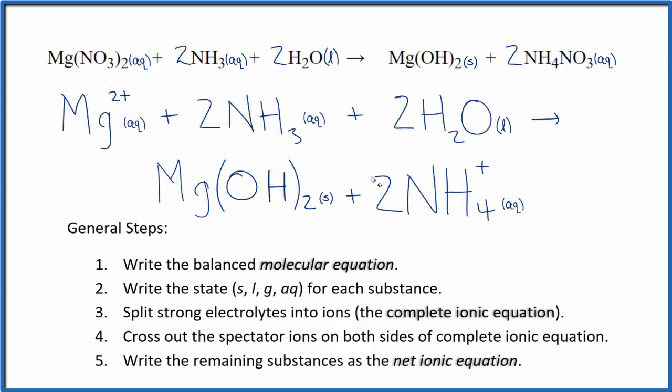So this is the net ionic equation for Mg(NO3)2 plus NH3 plus H2O. Note that charge is balanced. We have a 2 plus on this side here in the reactants. And in the products, we have 2 times 1 plus. So that's 2 plus. So the charge is the same on both sides. It's conserved. And if you count the atoms up, they're balanced too.